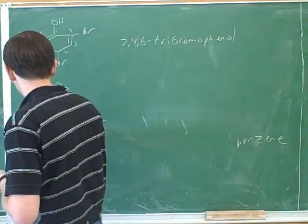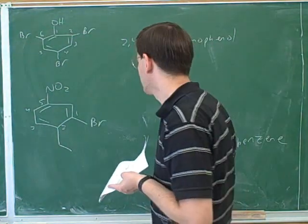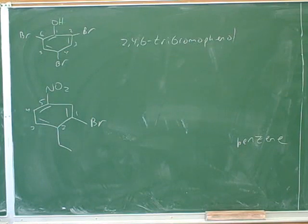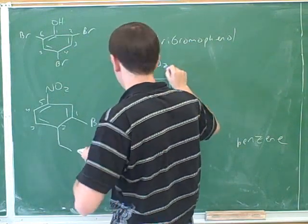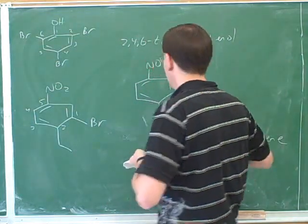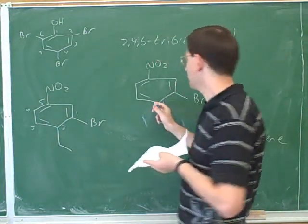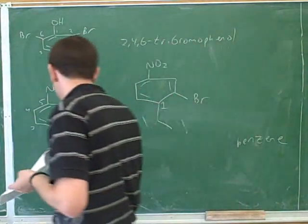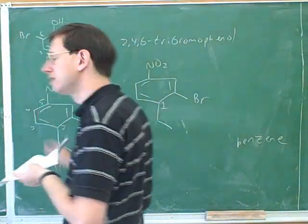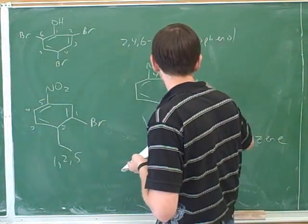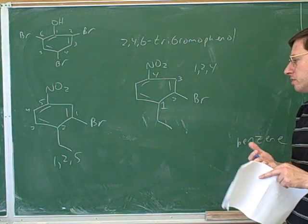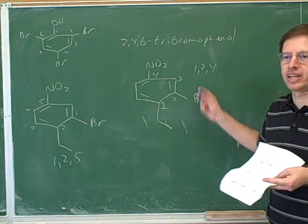Remember, we only use alphabetization to determine numbering if there's no other way. What we really want to do is give the substituents the lowest possible numbers. If bromine is number one and we go in one direction, the numbers come out as 1, 2, and 5. But if we give the ethyl group number one and go the other direction, we get 1, 2, and 4. That's better — 1, 2, 4 beats 1, 2, 5. So we're not going to use alphabetical ordering for the numbers here.